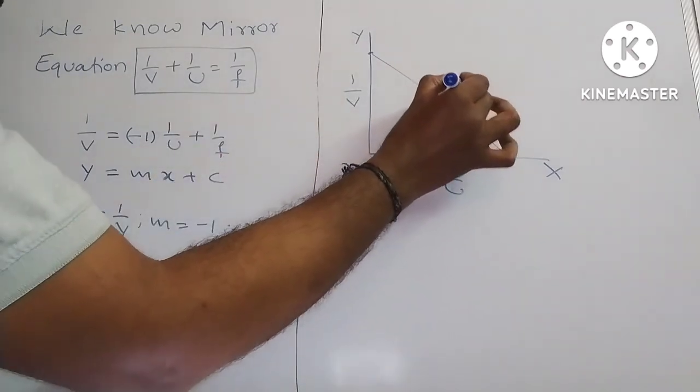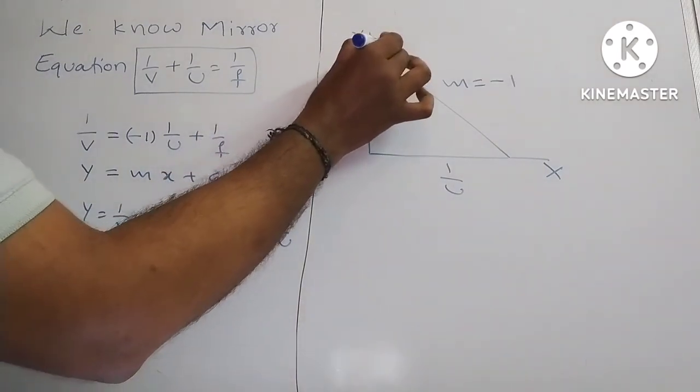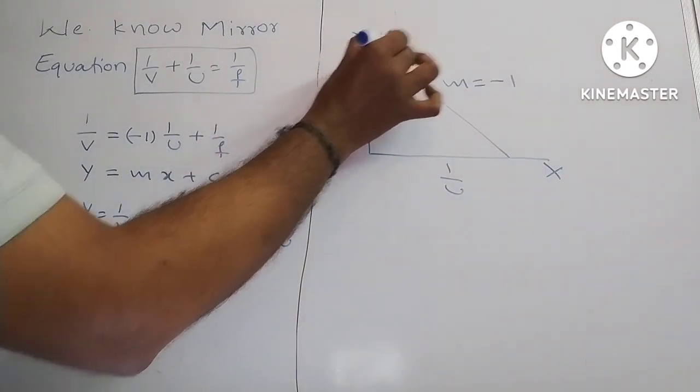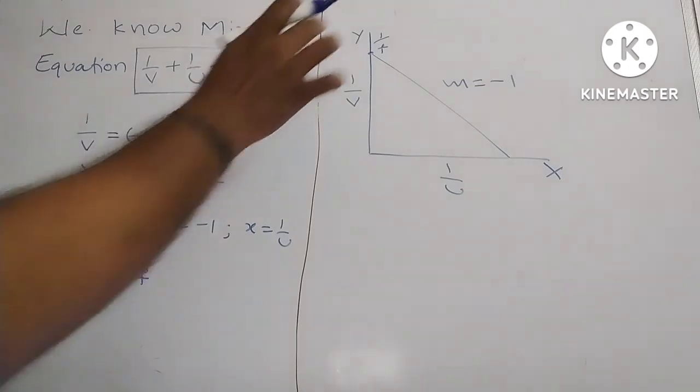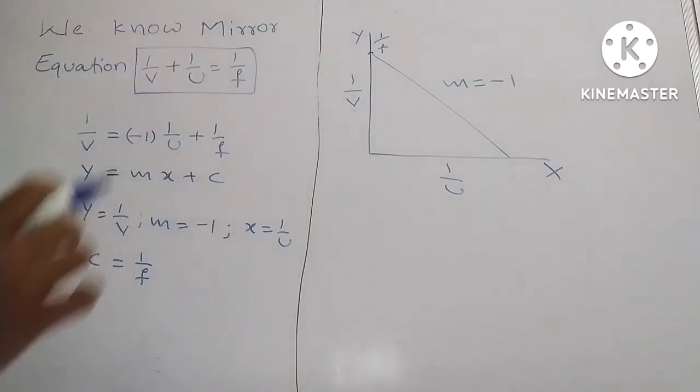Here slope m is equal to minus 1 and intersecting point is 1 by f. This is the nature of the graph. Thank you.